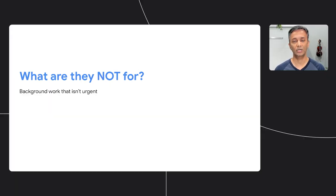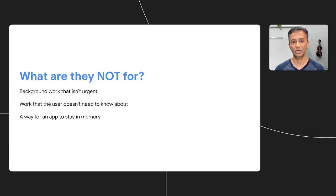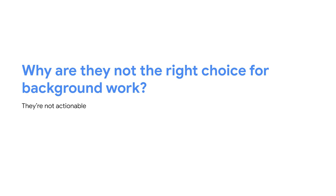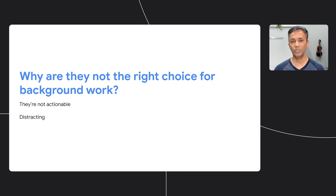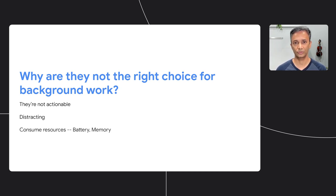Foreground services are not meant for tasks that aren't urgent or for work that the user doesn't need to be aware of. They also should not be used as a way for an app to stay resident in memory for the wrong reasons. Sure, they're convenient and reliable, but they're not user-friendly when the user can't get rid of them. And guess what some users do with such apps? They either turn off notifications for the app or uninstall it. There are several articles online that talk about persistent notifications and how to get rid of them. They can be distracting, especially when a notification pops up suddenly out of the blue in your status bar and then disappears before you even get a chance to see what was going on. Foreground services can consume valuable resources when used incorrectly, draining the battery and holding up precious memory.